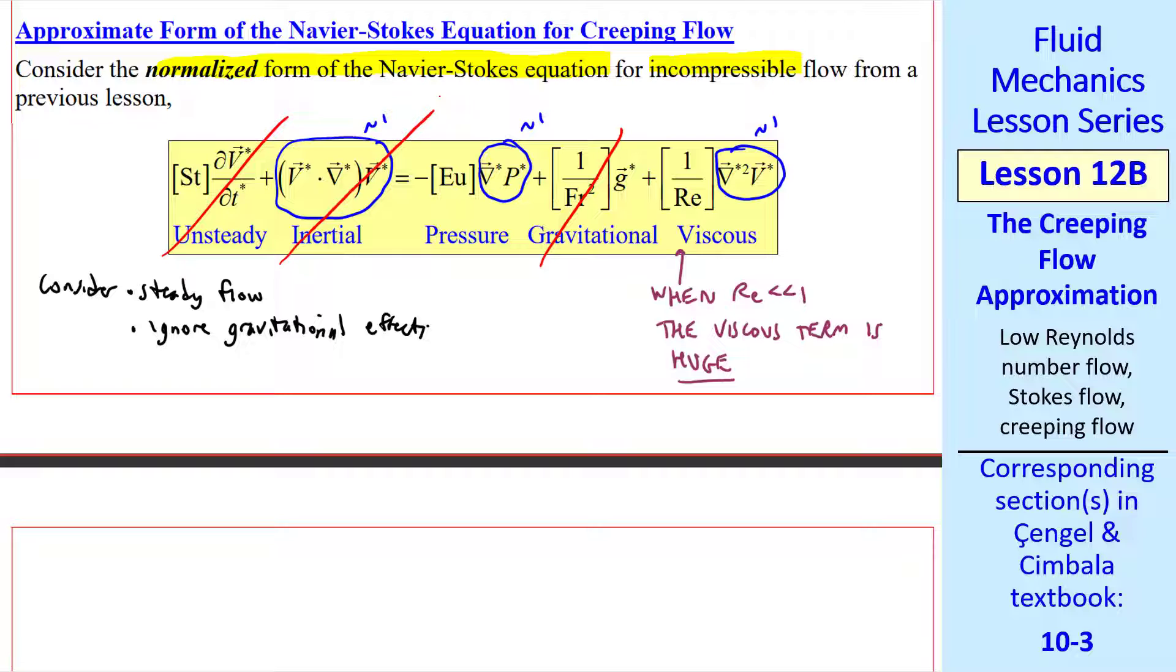The only remaining terms, then, are the viscous term and the pressure term. To balance this equation, the Euler number has to be large. And these two terms have to remain.